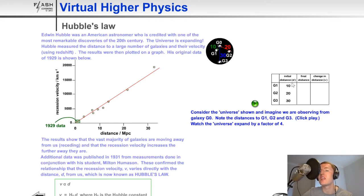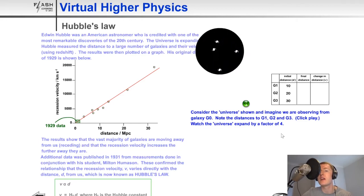So imagine we've got a distance of say 10 megaparsecs from G0 to G1 and then we've got a distance of 20 megaparsecs from G0 to G2 and lastly we've got a distance of 30 megaparsecs from G0 to G3. But over time space is going to expand and it will look something like this.